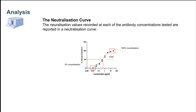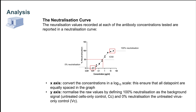After assay reading, we will have our data, which will reflect virus infectivity at different sample concentrations. These data are plotted in a neutralization curve, where the x-axis displays the log10 of the sample concentrations, and the y-axis displays the normalized percent neutralization, meaning that the raw percent neutralization will be compared relative to the cell-only control at 0% infection and the virus-only control at 100% infection.